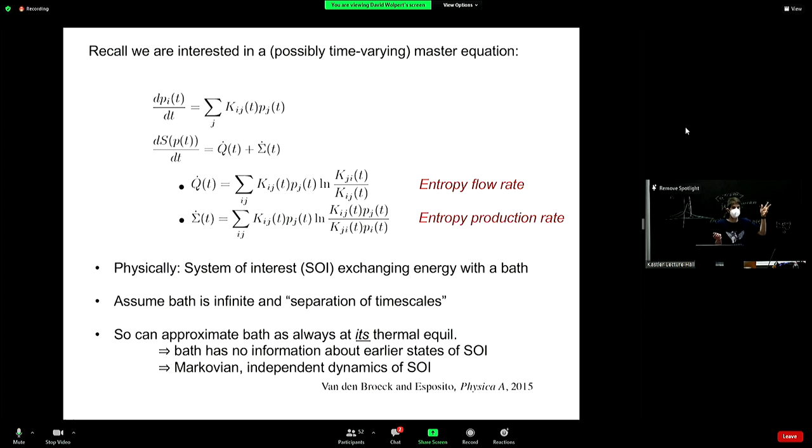The end result being that if the bath is always at thermal equilibrium, it has no information in it about its previous interactions with the system of interest. So that's what allows the evolution of the state of the system of interest to be formulated, modeled, as a Markovian process. If there were not a separation of time scales, if the bath were going through its dynamics only at the same speed with which the system of interest is, then even if the bath were infinite, it wouldn't matter. The state of the bath would provide you with some information about its earlier interactions with the system of interest. Therefore, the current state of the system of interest would be telling you something about the state of the bath. The state of the bath would be telling you something about the previous state of the system of interest. So the current state would actually reflect earlier states, which violates the Markovian dynamics assumption.